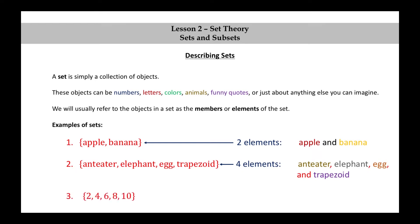The set consisting of 2, 4, 6, 8, and 10 has five elements. The elements of this set happen to be numbers. The numbers 2, 4, 6, 8, and 10.